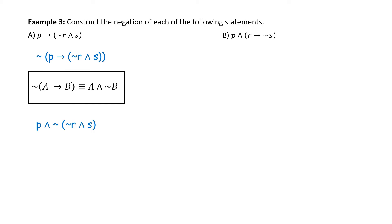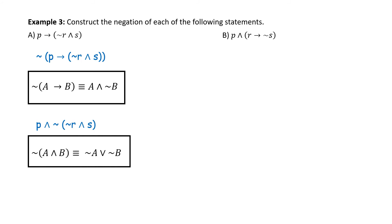Now we use DeMorgan's Laws for the second part — the negation of A and B equals not A or not B. Applying that to not (not R and S) gives us P and R or not S.